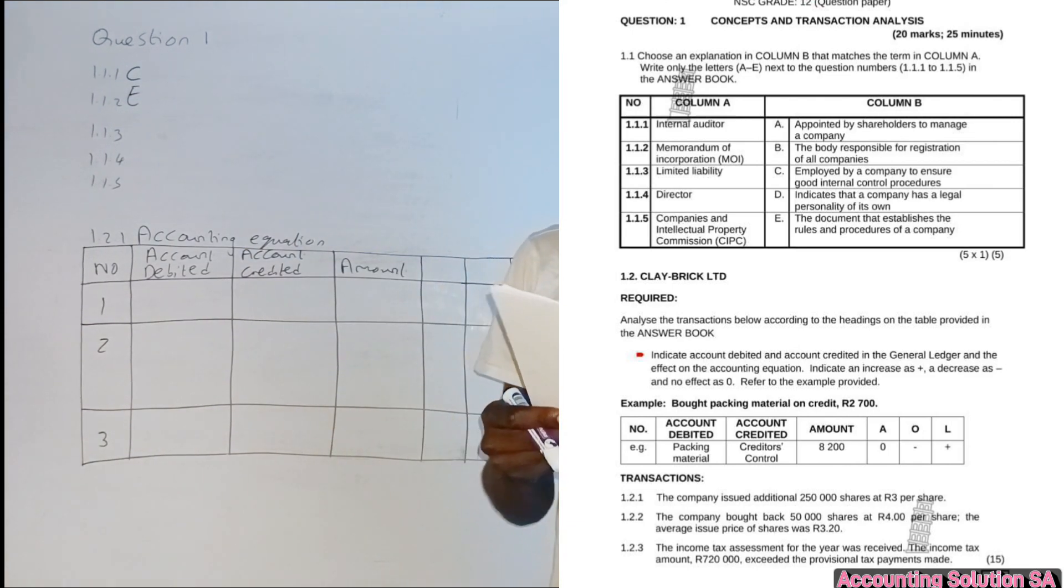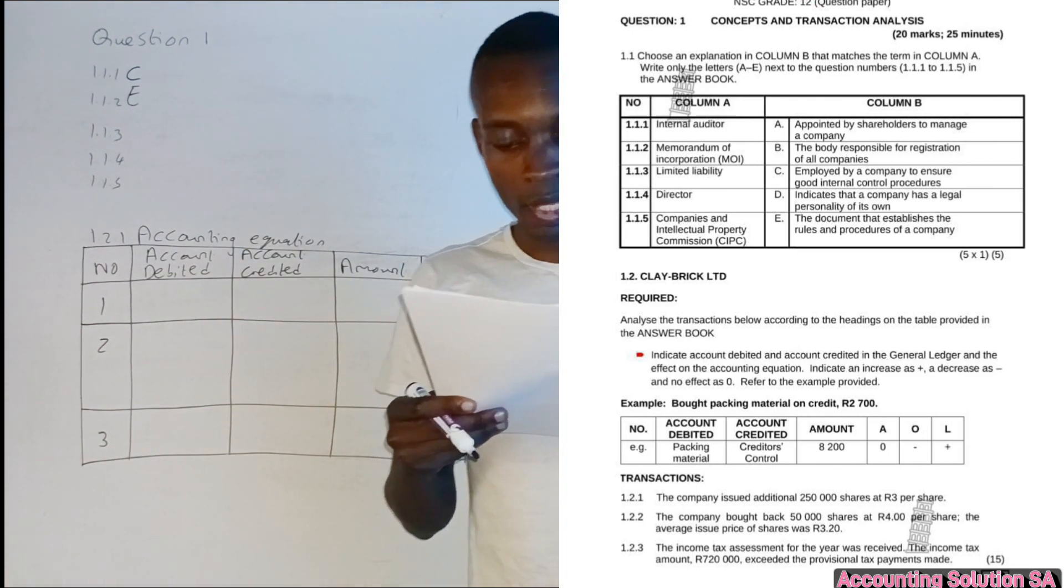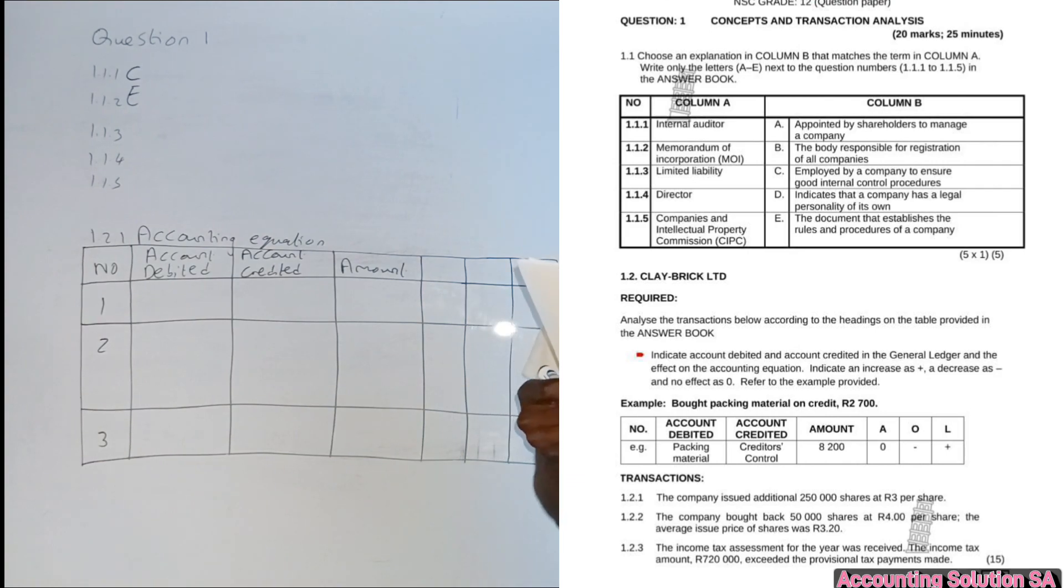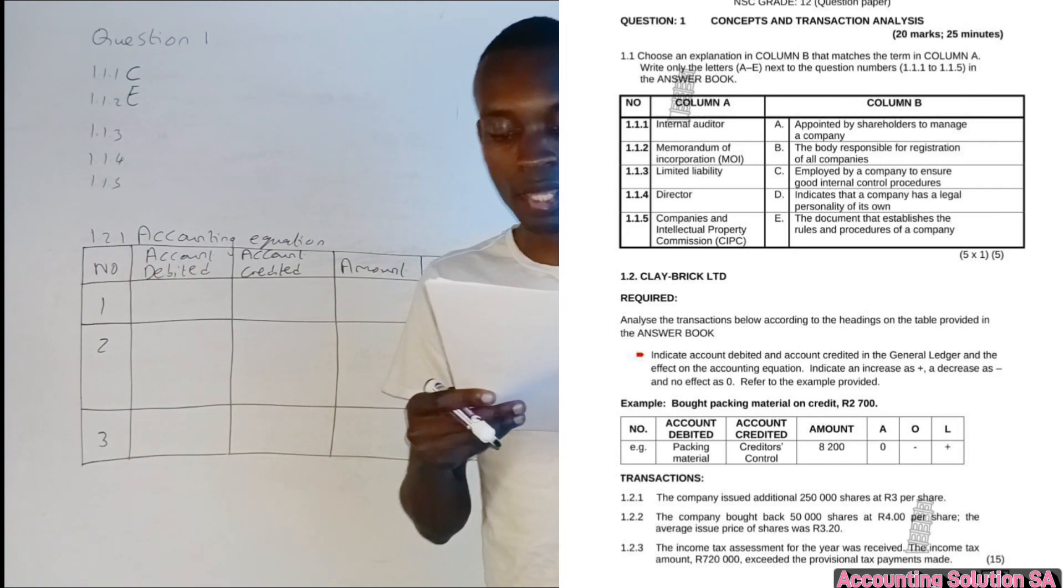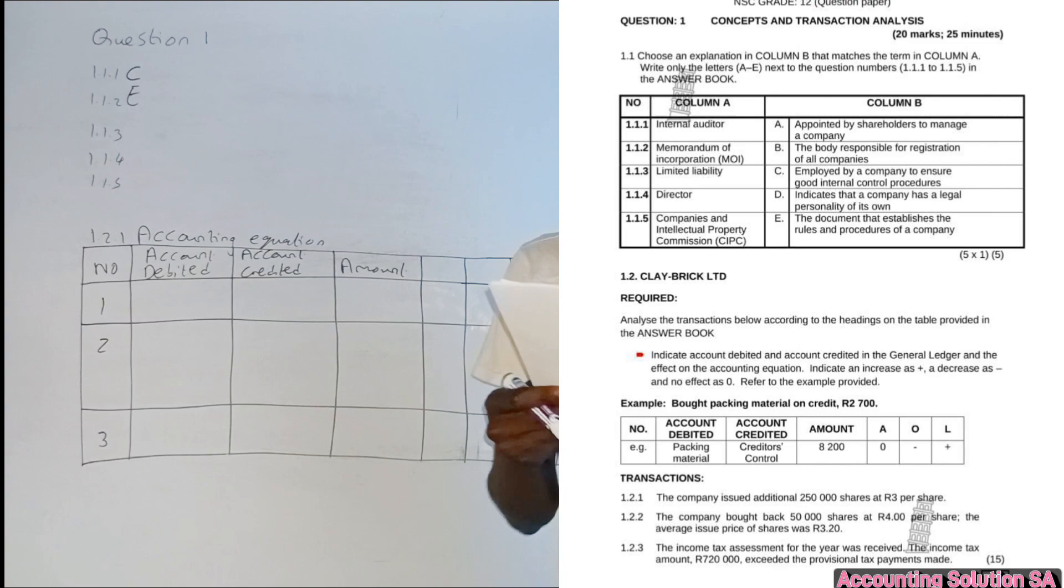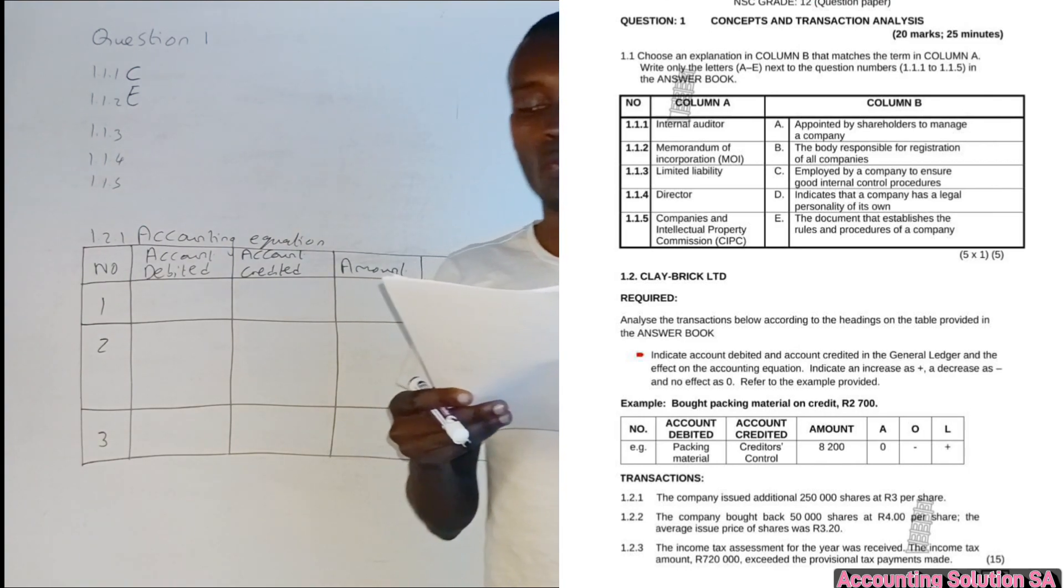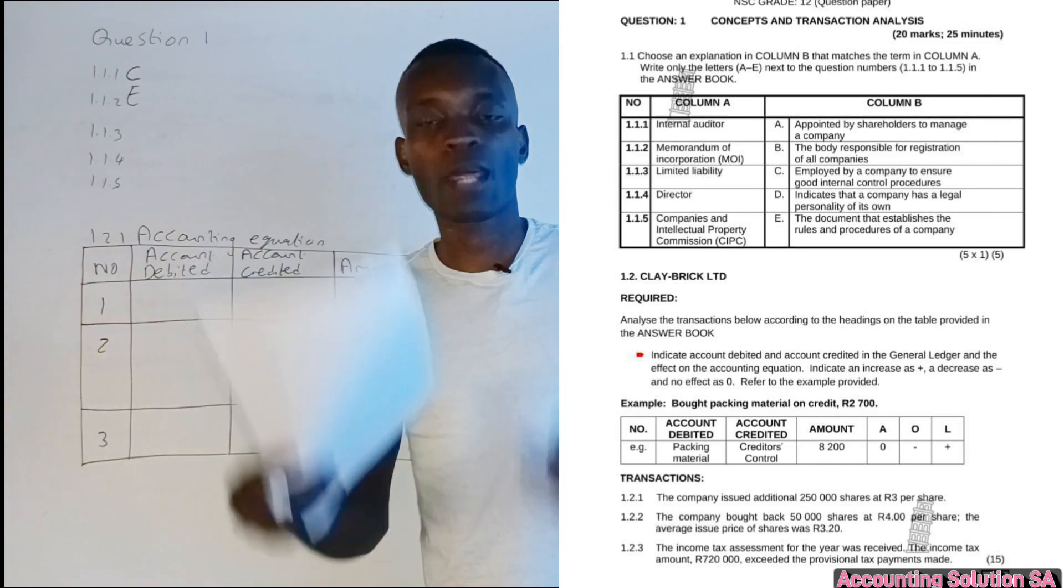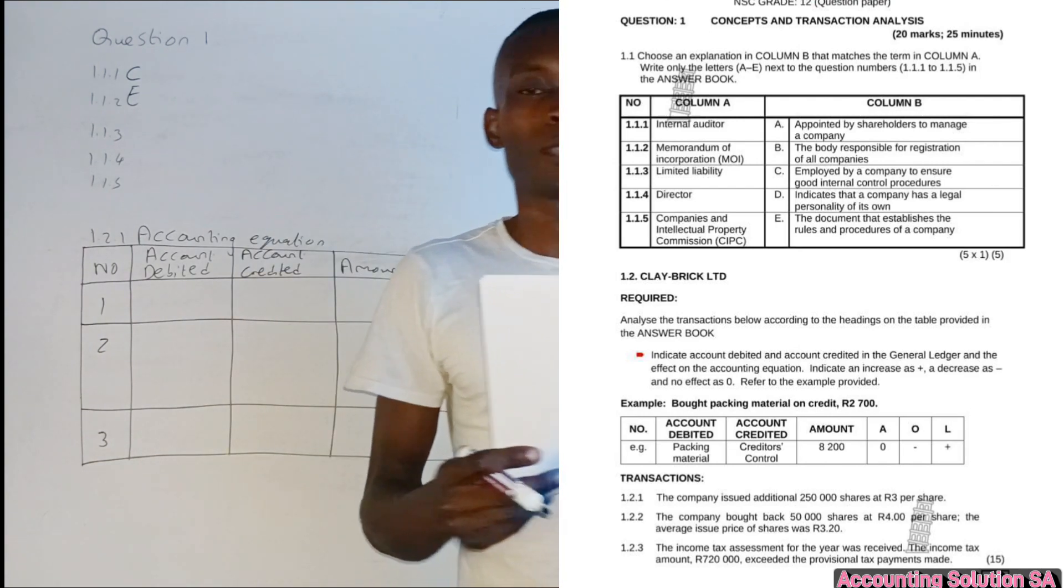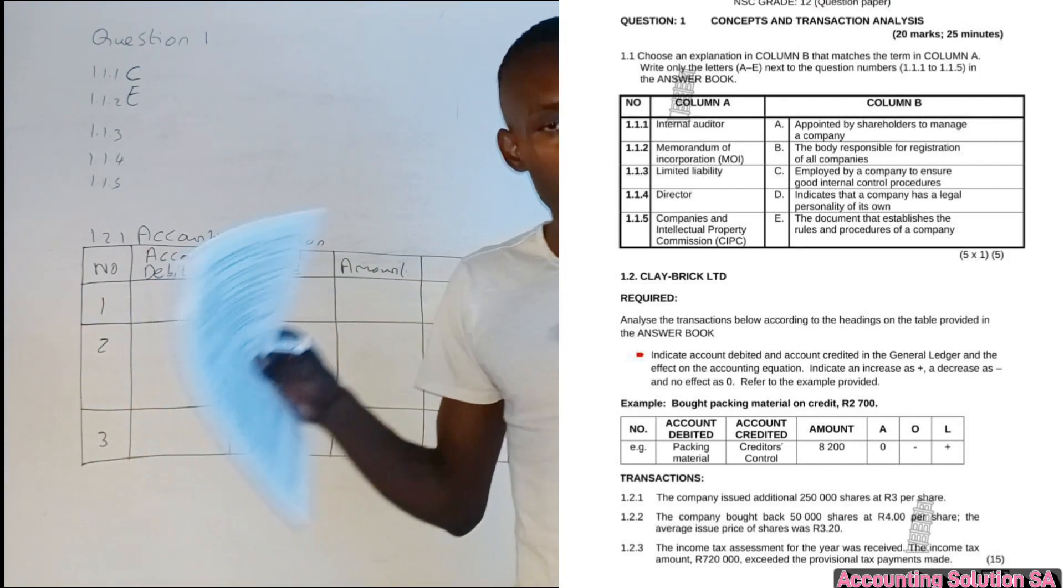The following one is limited liability. Limited liability, number D, indicates that the company has legal personality of its own, which means that if the company is bankrupt they don't take the assets of the owner, they only take what belongs to the business.